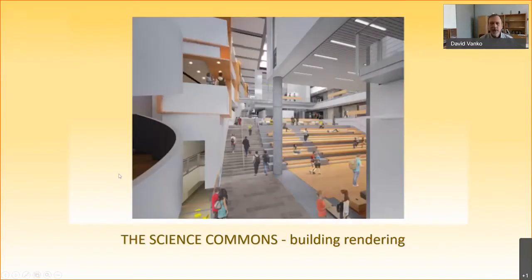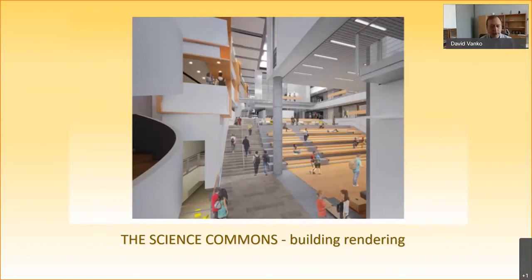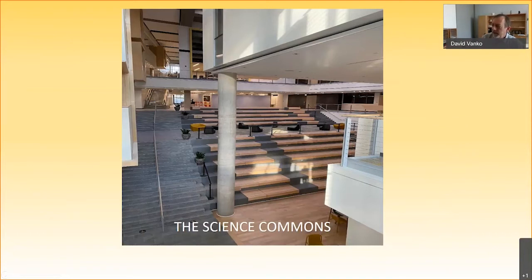Let's look at some pictures from inside the building. This is an artist's rendering from Canon Design of what the central core of the building would look like — in an area that we call the science commons, kind of like the neighborhood commons. This is where you can hang out. It's public space, it's shared space. You can have events here, you can study here, you can just meet people here. And the next is a photograph of exactly the same thing in the finished space — there's the science commons in the finished space.